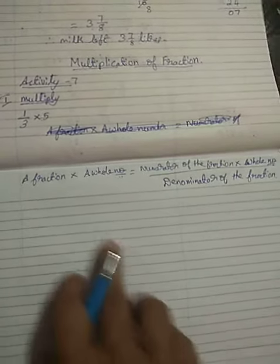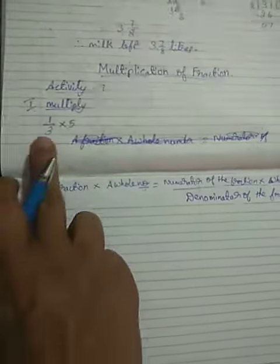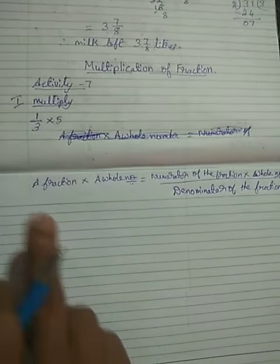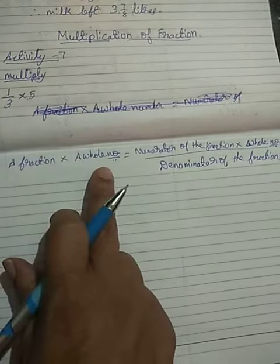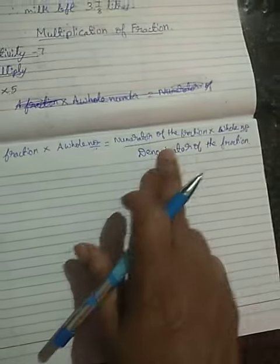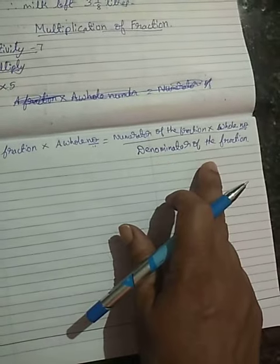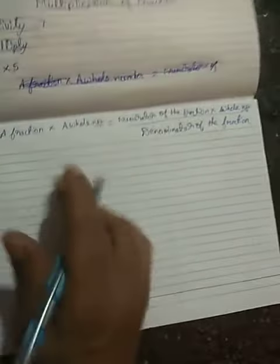Multiplication of fractions: we'll look at 1/3 × 5. That's a fraction and a whole number. When a fraction and whole number are given, fraction × whole number equals numerator of the fraction × whole number, divided by denominator of the fraction.